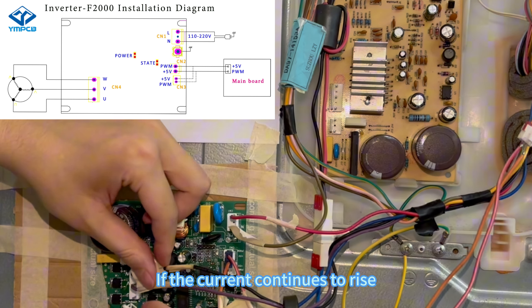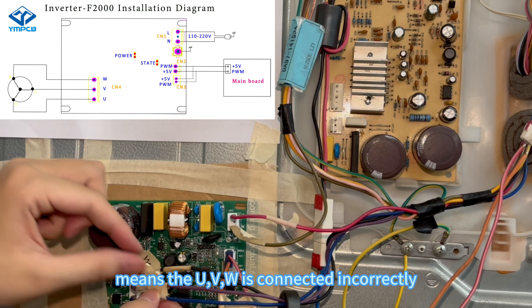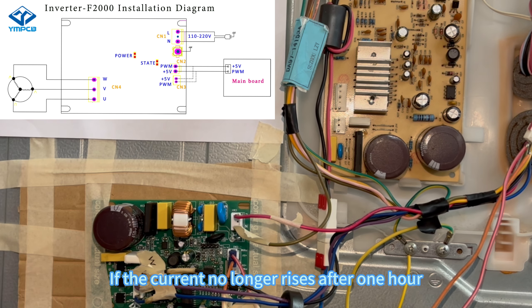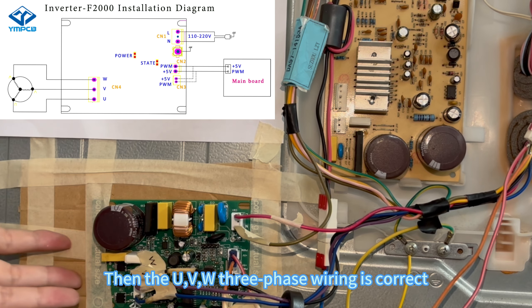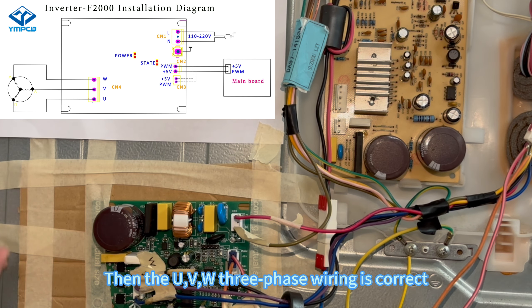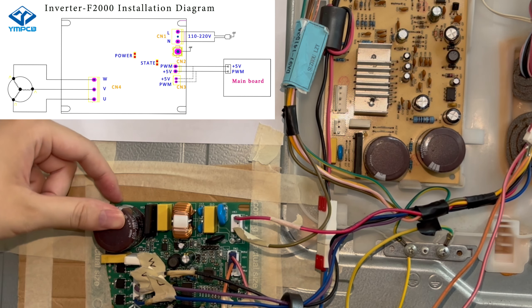If the current continues to rise, it means the UV-W is connected incorrectly. If the current no longer rises after one hour, then the UV-W 3-phase wiring is correct.